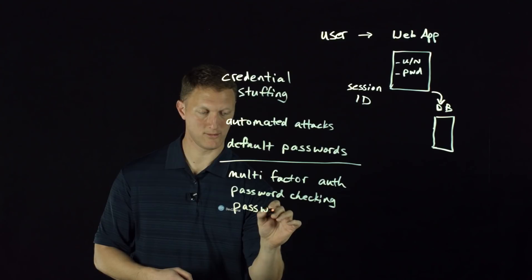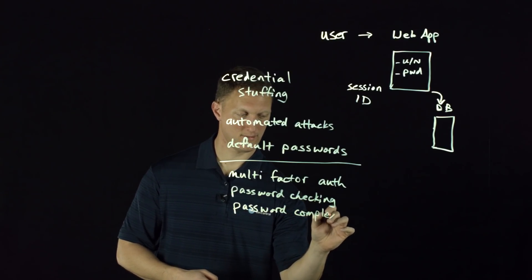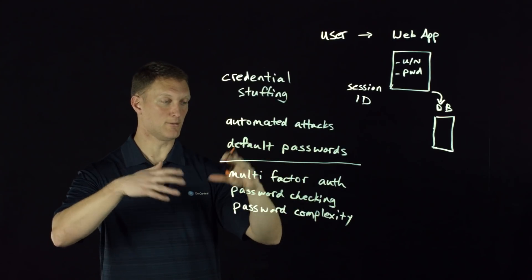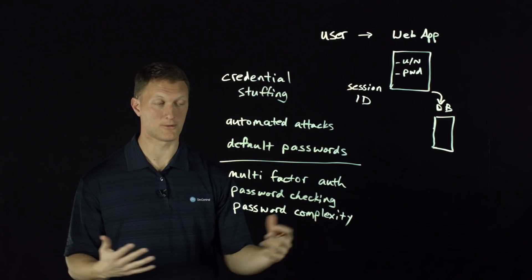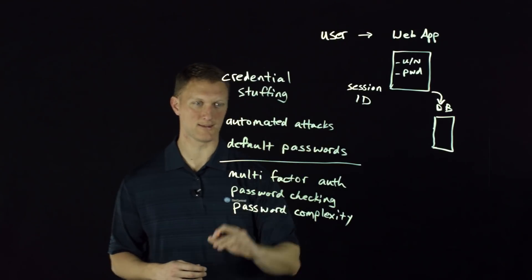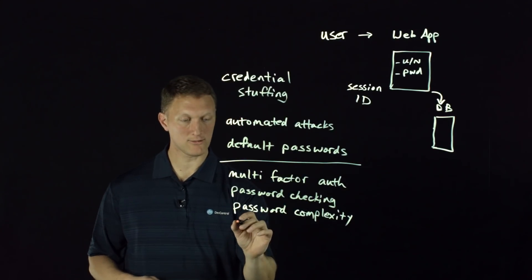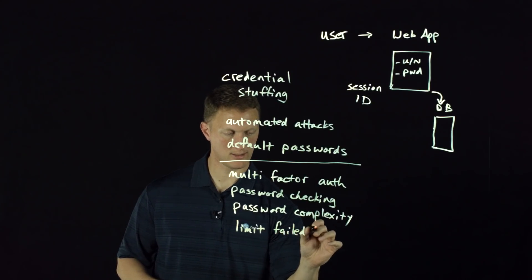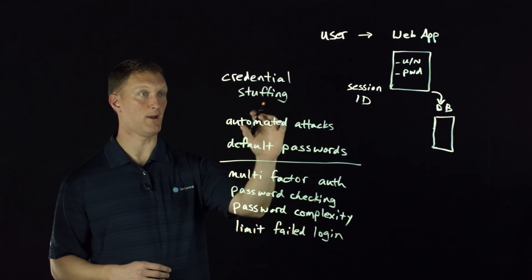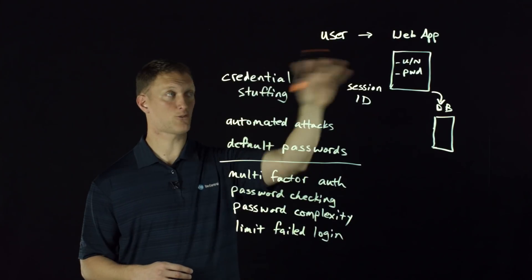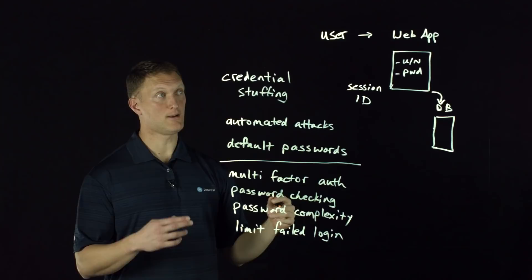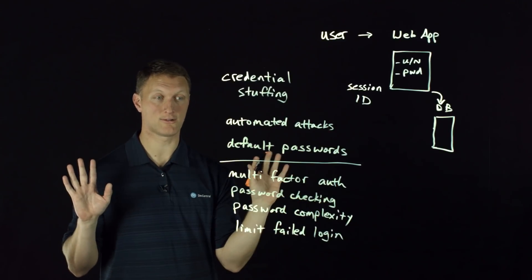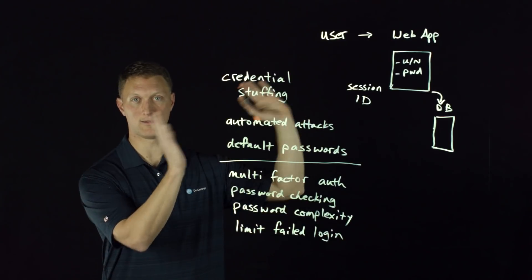That brings us to password complexity — basically requiring that whenever users establish their password, it must meet certain complexity requirements, which makes attacks like these much harder. You can also set limits on failed logins. If someone — using an automated attack or credential stuffing — is throwing tons of different passwords at the same username, after a certain number of failed attempts, that account gets locked out and the user can't get back in until they contact the administrator.